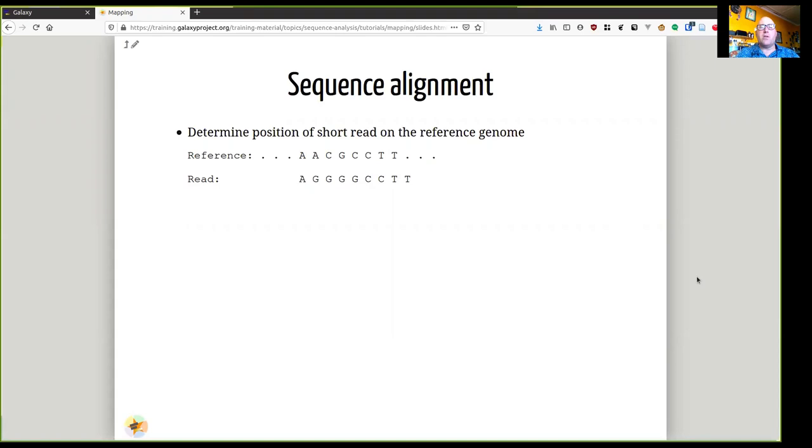So the starting point for mapping is a process called sequence alignment. We are using only the combination of letters in the short read sequence to determine where it fits on the reference genome. So in this example, look at that reference at the top there: A, A, C, G, C, C, T, T. And then we have a read that has some similarities and some differences. So let's have a look at that.